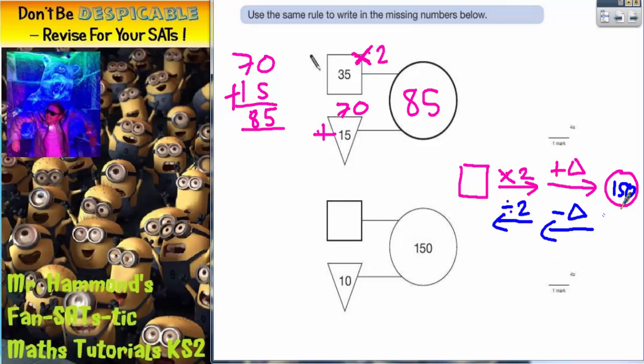So what we've got to do now is work this rule backwards. So when you go forward, you times 2 and add the triangle. When you work in reverse, you subtract the triangle and divide by 2.